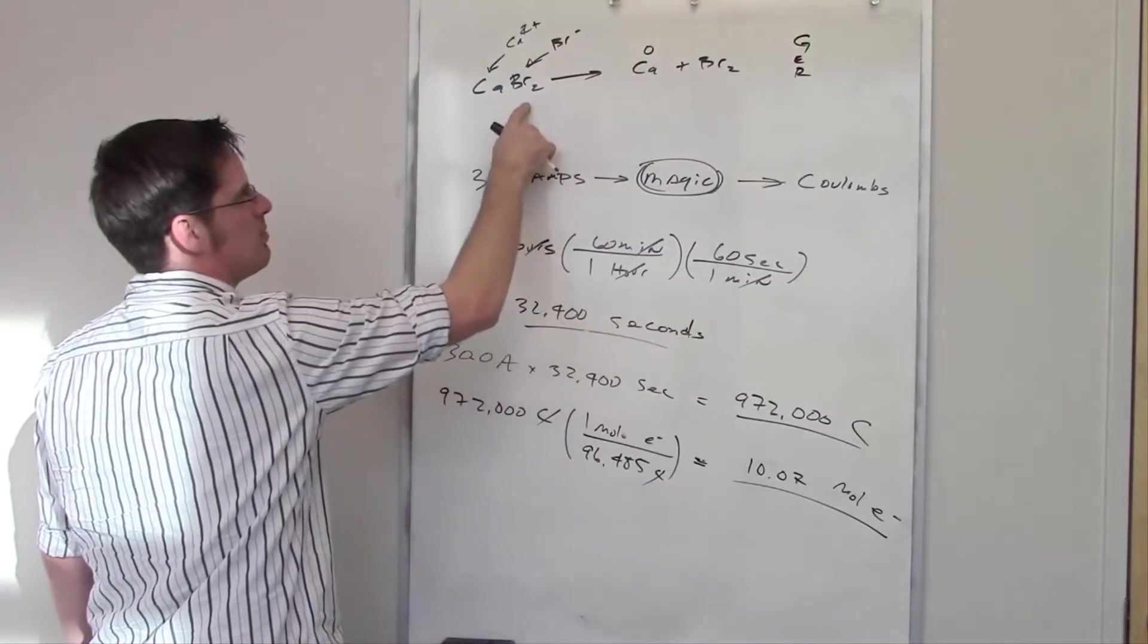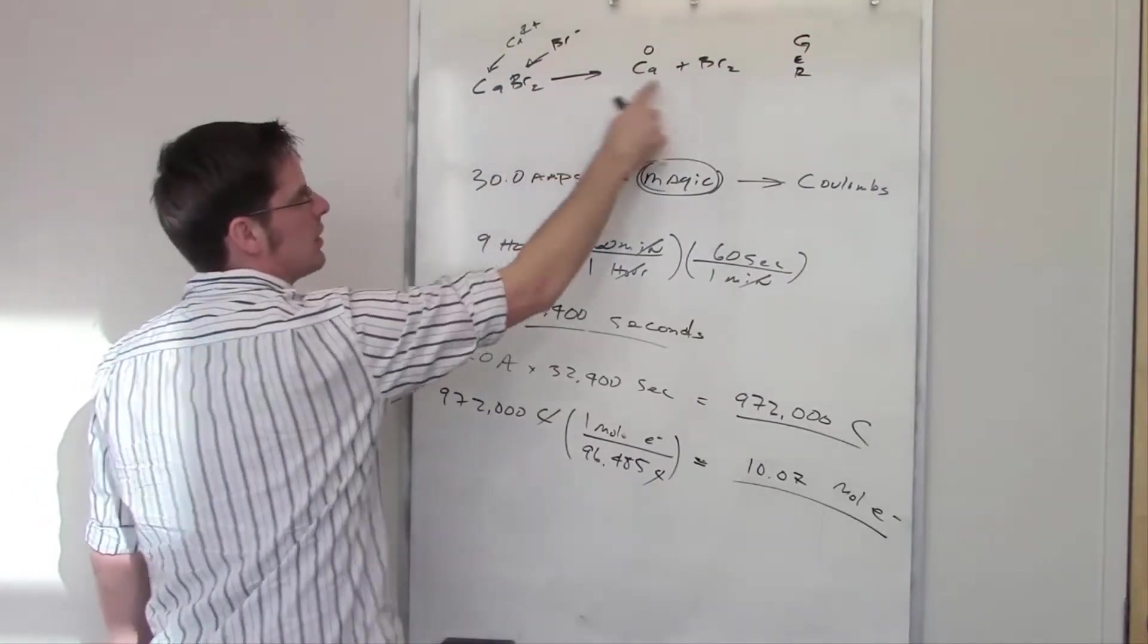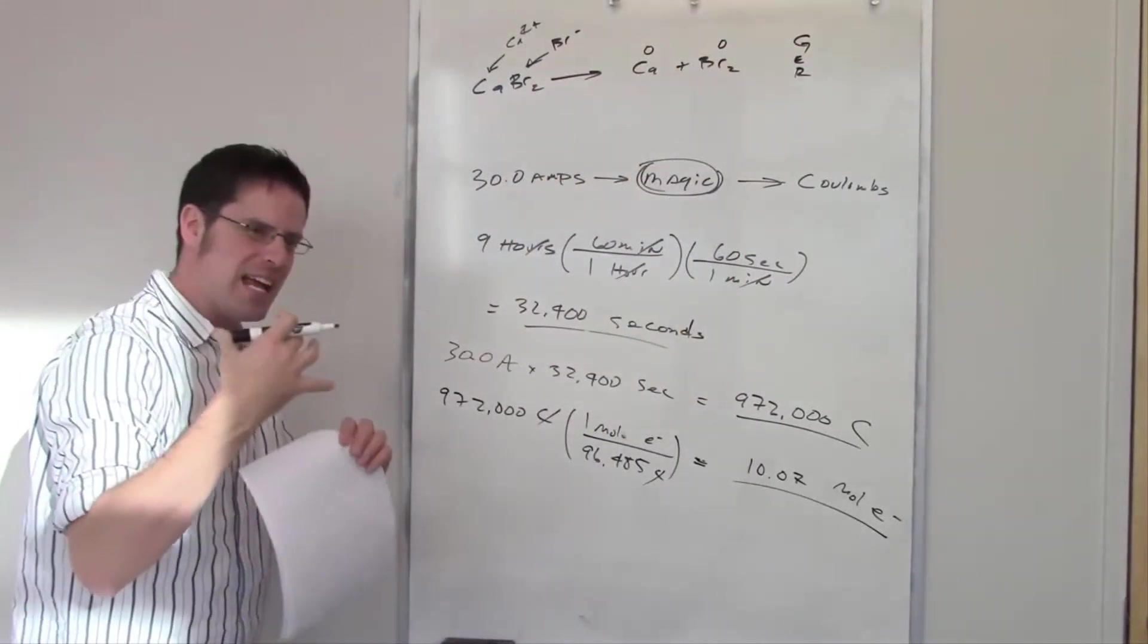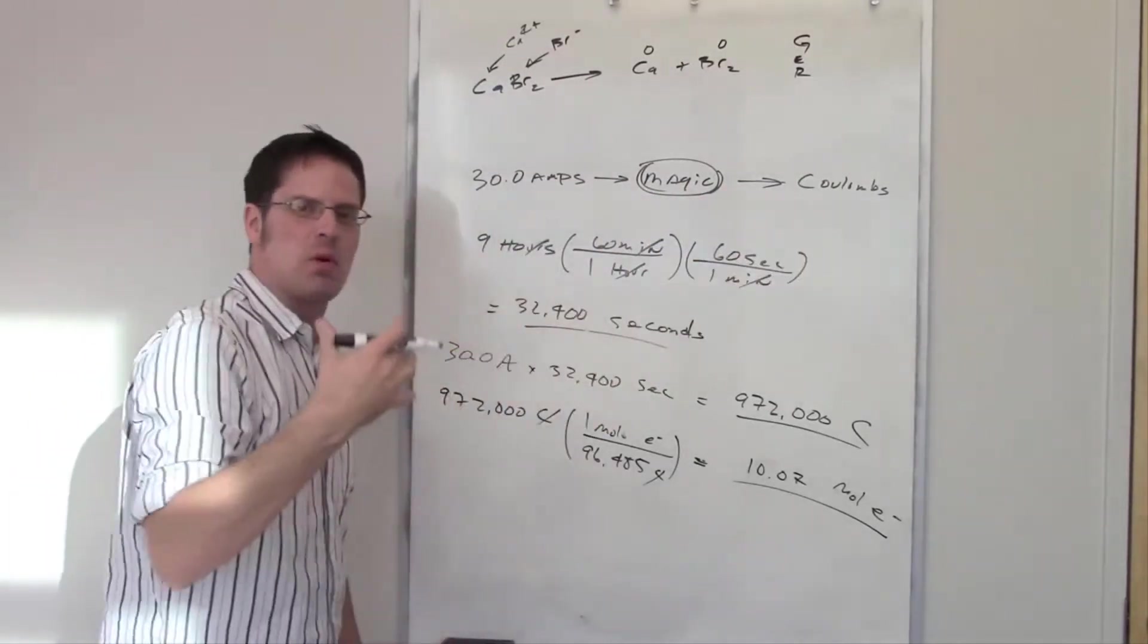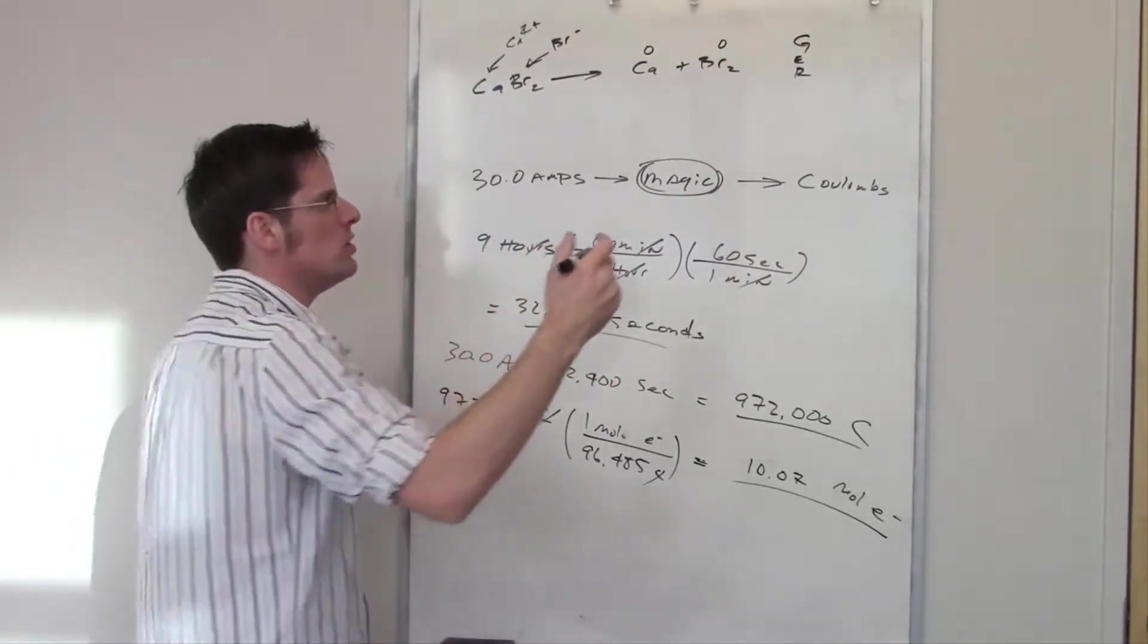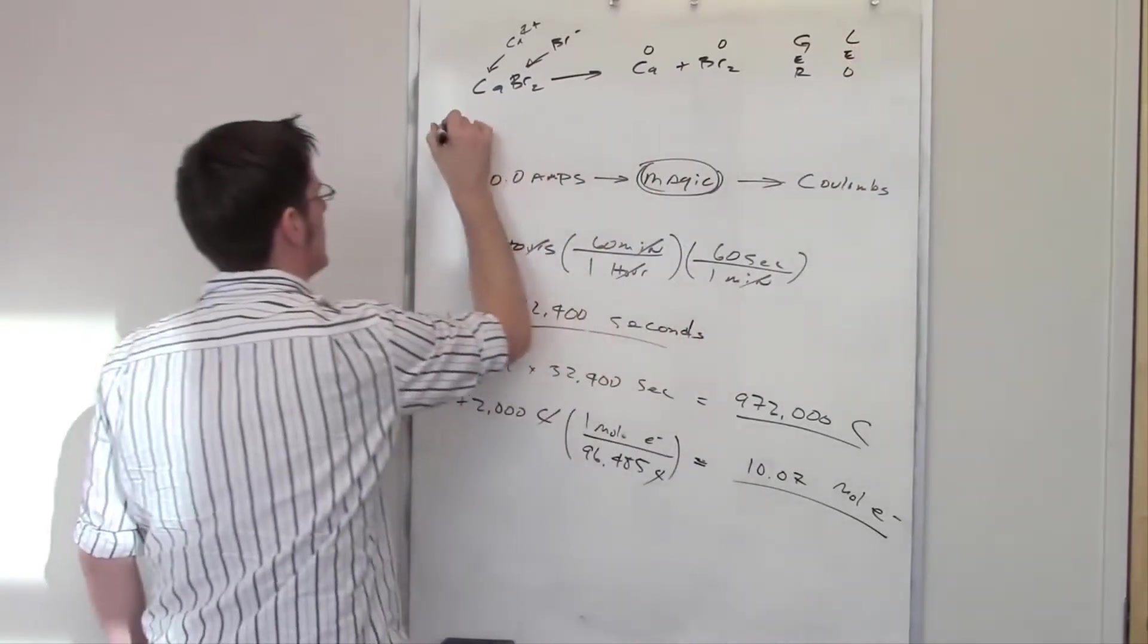I've got Br⁻ going to Br⁰. I've got something that's got a negative one going to zero. It's becoming more positive, which means it's losing electrons, so that is oxidation.